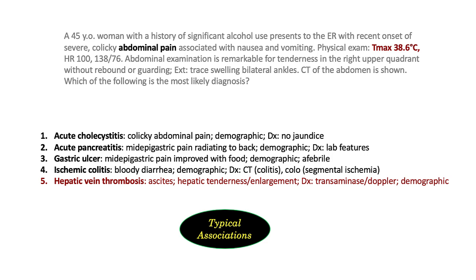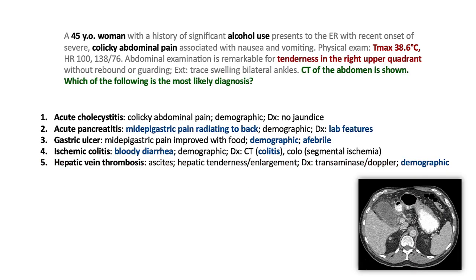Hepatic vein thrombosis is characterized by ascites, hepatic tenderness and/or enlargement, and diagnostic tests including elevation of transaminases — but more typically, reversal of flow on Doppler imaging — along with an appropriate demographic including a thrombophilic state. Now we can plug in the rest of the stem: she is a 45-year-old woman, which is a good demographic for acute cholecystitis. We know the presence of alcohol use, which goes along with acute pancreatitis — but in acute pancreatitis, where do we expect to find the pain? In the mid-epigastrium radiating through to the back. This pain is described as colicky, and they offer no lab confirmation, so the alcohol use is likely a red herring.